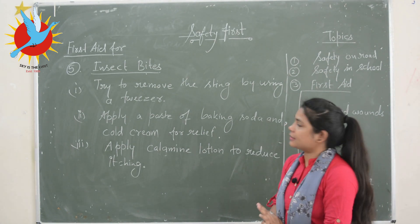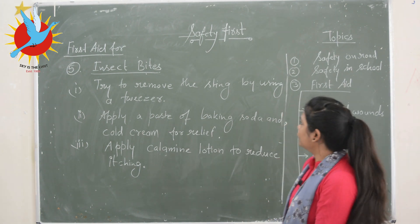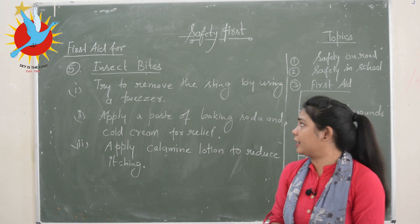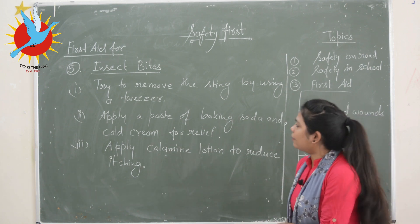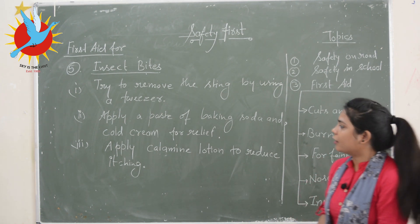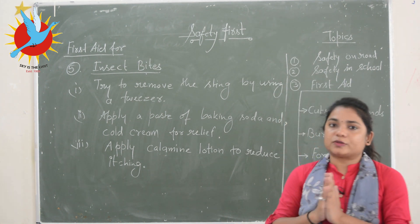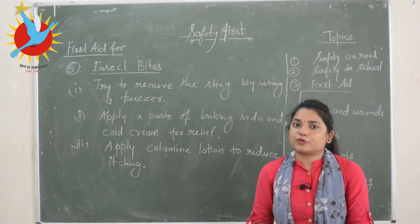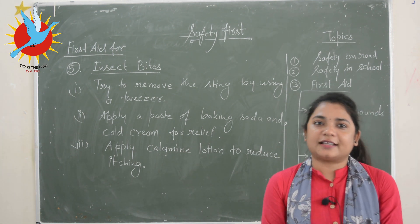First aid for insect bites: step one — try to remove the sting using a tweezer (the insect could be a honeybee or any other insect). Step two — apply a paste of baking soda and cold cream for instant relief. Step three — apply calamine lotion to reduce itching, or use ice packs to reduce swelling. If necessary, call the doctor. The chapter ends here and the exercise will be provided to you through WhatsApp.